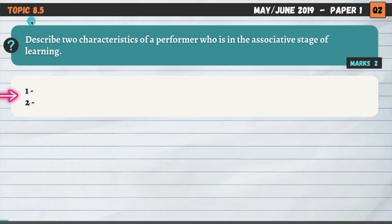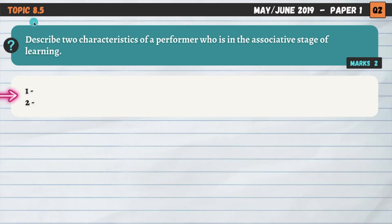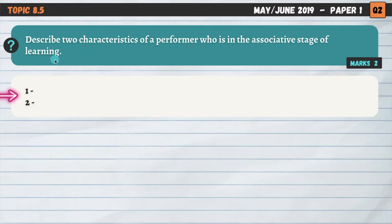Our first question is on topic 8.5, the stages of learning. You can head down to the description of this video and find links to the relevant short summary videos. So if you struggle to answer a question, go and watch the relevant video, then come back and attempt it. Describe two characteristics of a performer who is in the associative stage of learning — two characteristics for two marks.